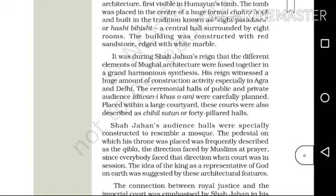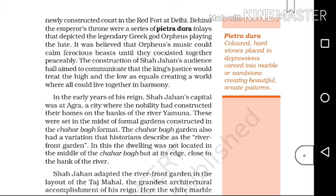The idea of the king as a representative of God on earth was suggested by these architectural features. The connection between royal justice and the imperial court was emphasized by Shah Jahan in his newly constructed court in the Red Fort at Delhi.